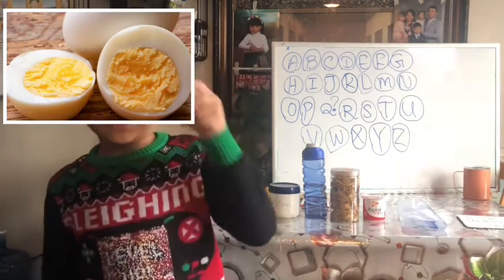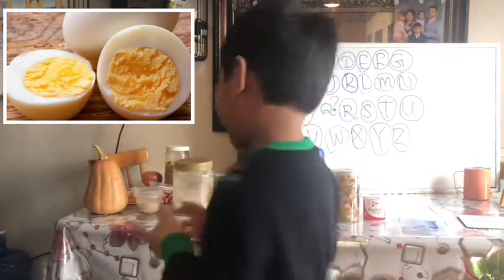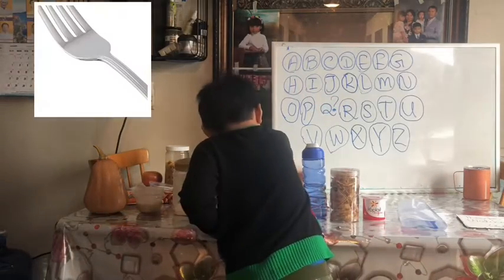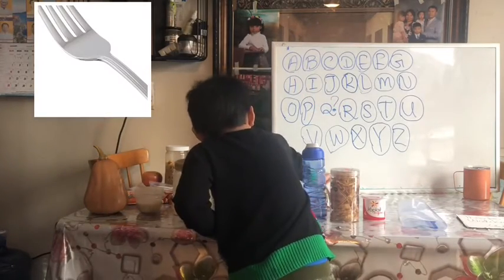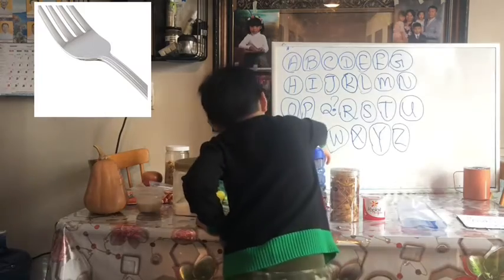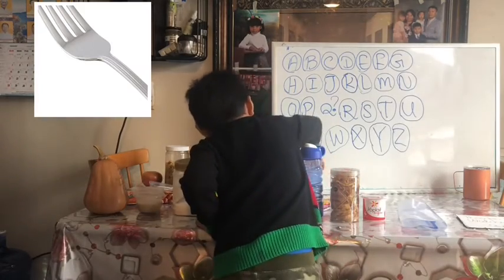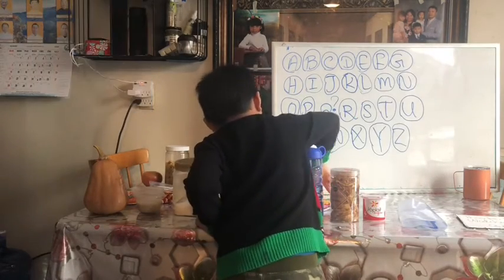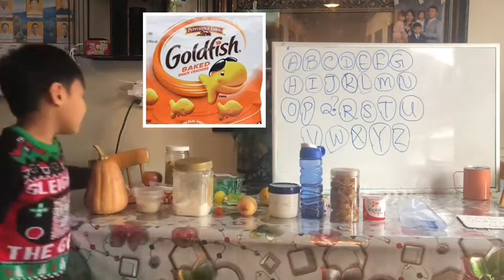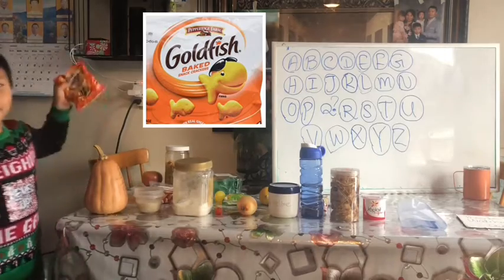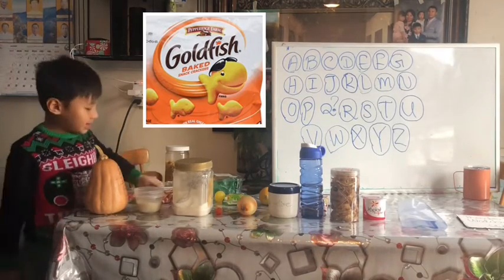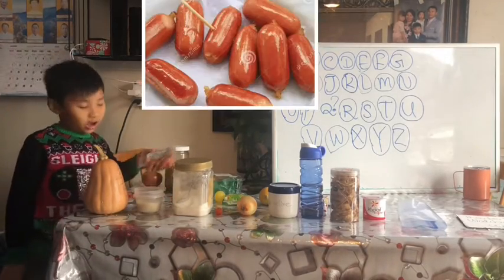E is for egg, F is for four, G is for goldfish, H is for hotdog.